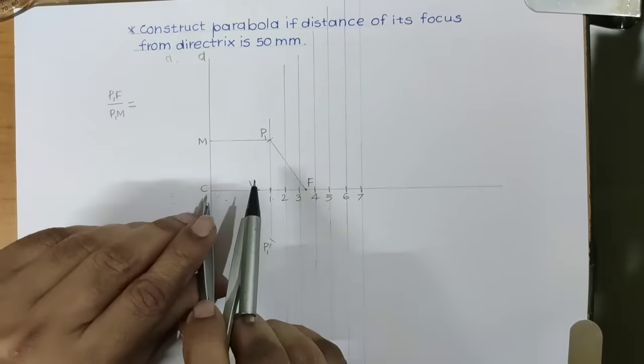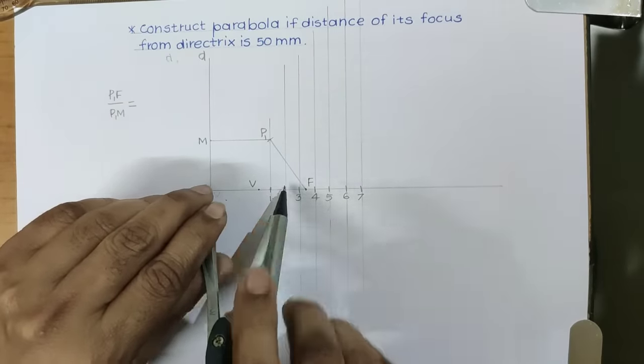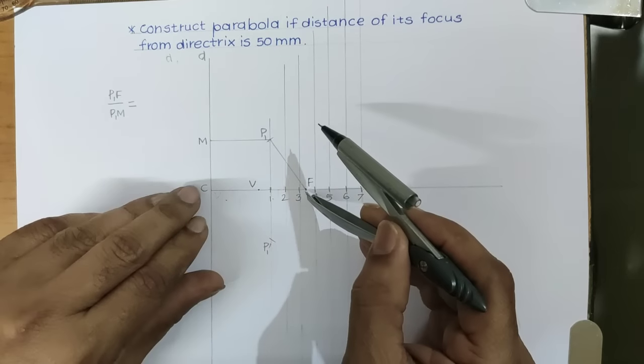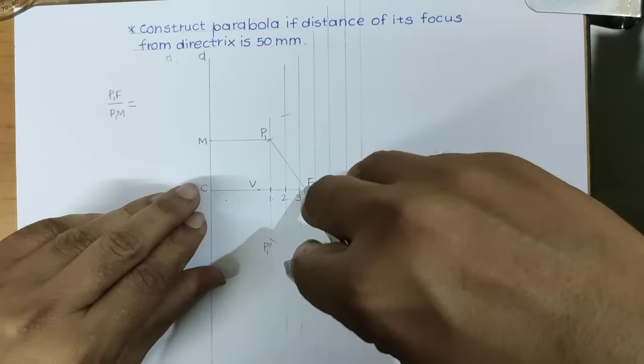Then, take distance equal to C2 in compass and F as center, cut second line on either side.